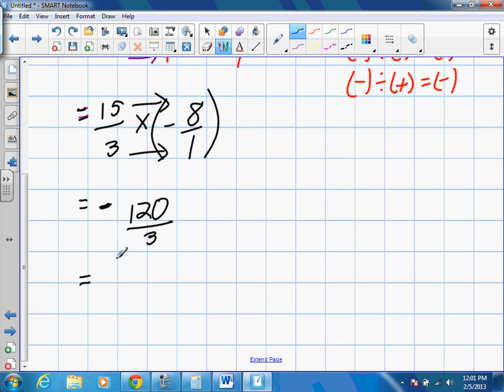We can actually divide that fraction. You can leave it like this. This is technically the right answer. But it can also be written as a whole number. Anyone know what that is? Negative 40. That's right. It's the same thing as writing negative 40.